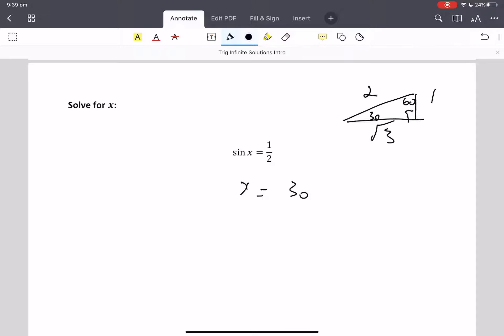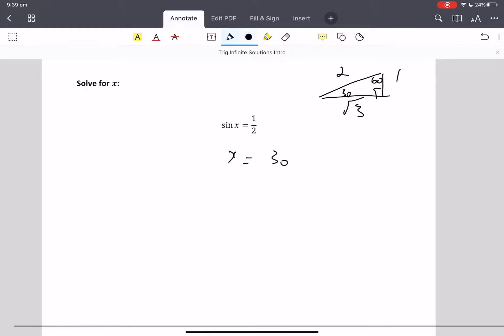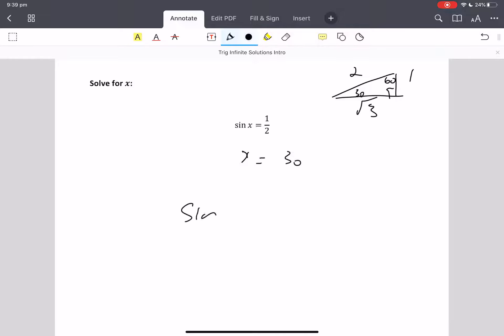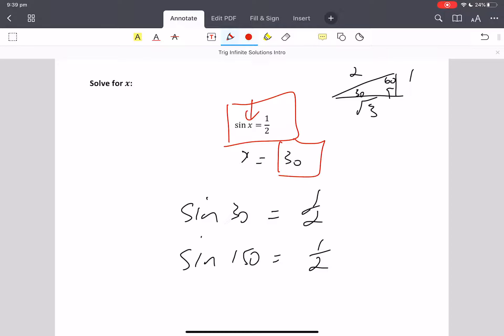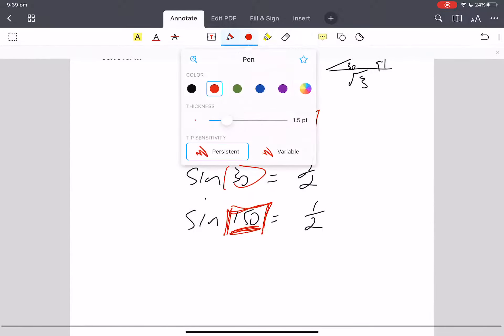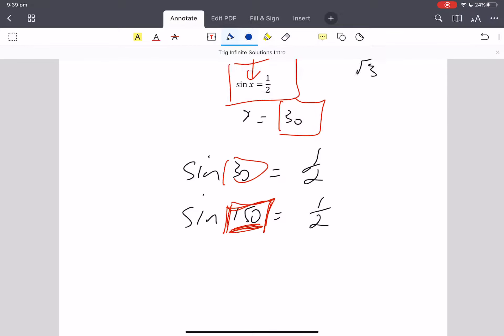Also, in grade 10, we know that sine 30 is a half. For some strange reason, sine 150 is also a half. So one of you is now going, oh my gosh, when I'm solving for X, X isn't just 30, is it? X could also be 150.